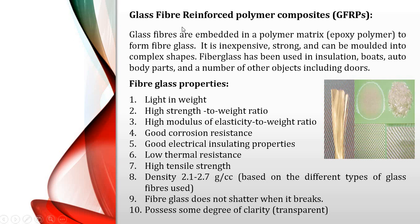Glass fiber reinforced polymer composites use fine fibers of glass embedded in a polymer matrix — especially epoxy resin or a mixture of epoxy and polystyrene. They are inexpensive and strong with many applications. Their properties include light weight, high strength, high modulus of elasticity to weight ratio, corrosion resistance, and very high tensile strength. However, they have low thermal resistance as glass starts melting at high temperature.